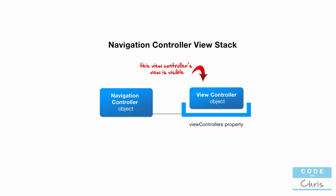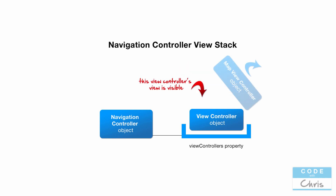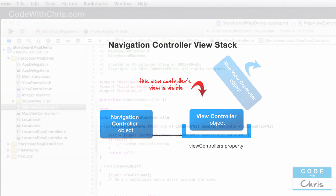The view controller at the very top of the stack is the one whose view is visible to the user. With a push transition — which we chose when hooking up the button in the storyboard — the navigation controller starts with just one view controller in its stack: the initial view with the coffee beans image. When the user clicks the button, the second view controller with the map view gets pushed onto the top of the stack. When the user hits back, it's removed and the first view is shown again.